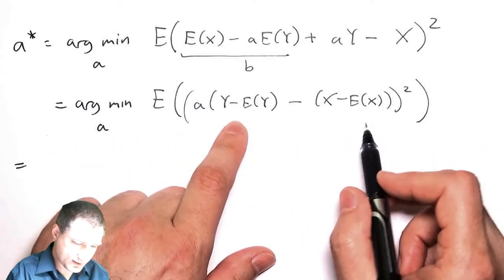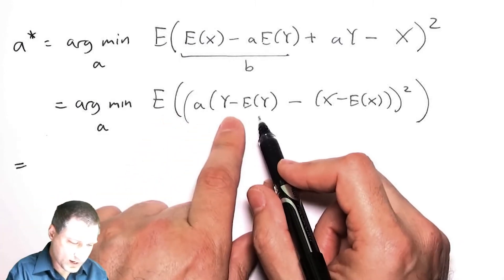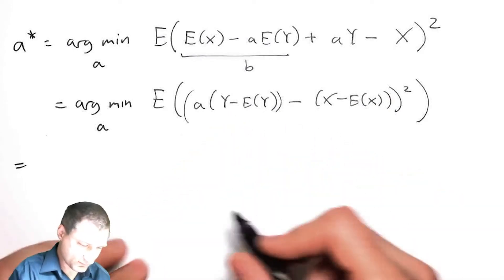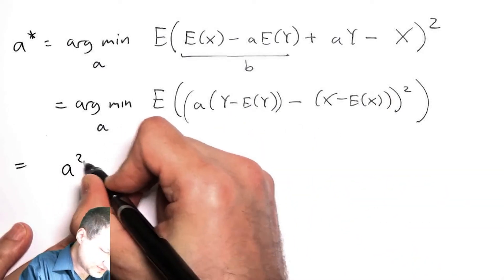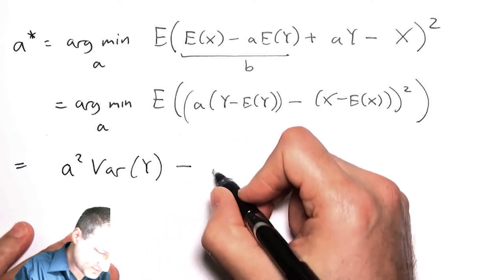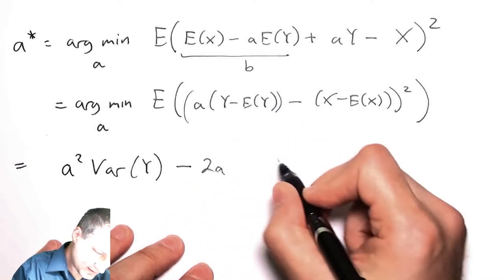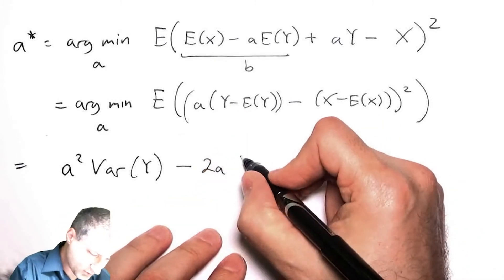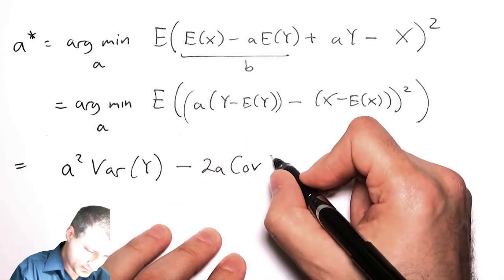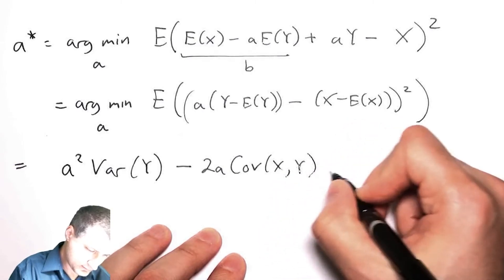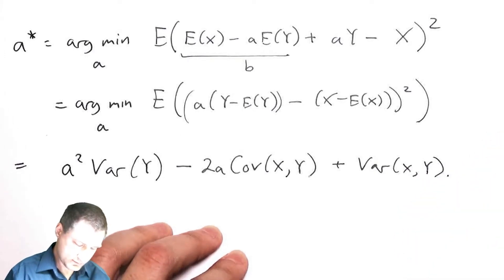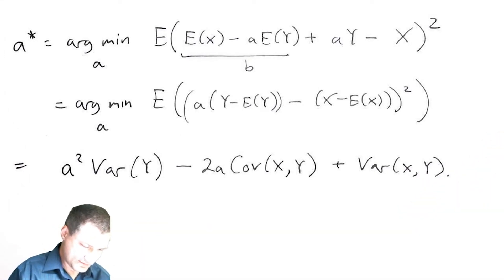You can see that when I do some squaring, when I take the expected value of Y minus expected value of Y squared, that's just the variance of Y. So what I have is a^2·Var(Y) - 2a·Cov(X,Y) + Var(X).